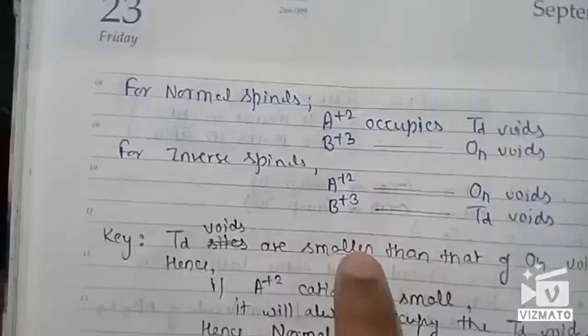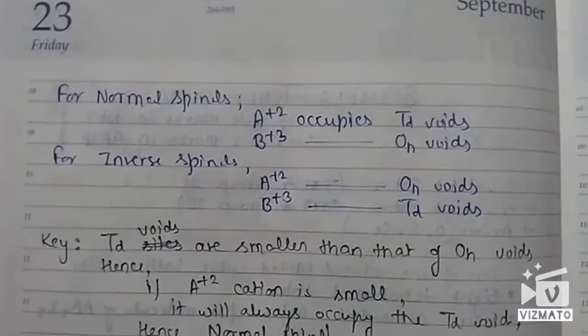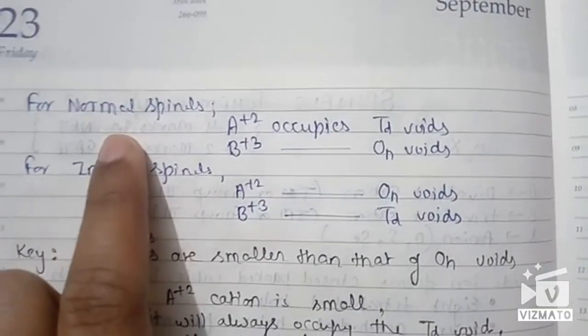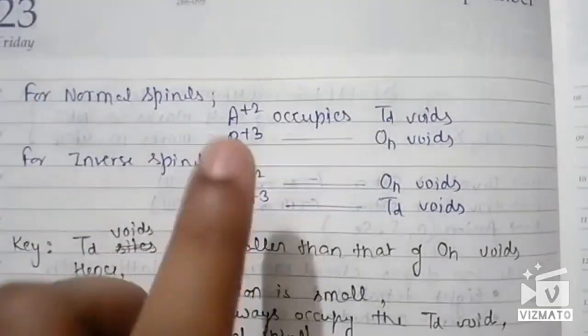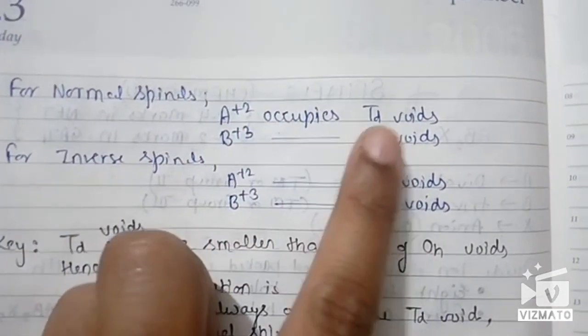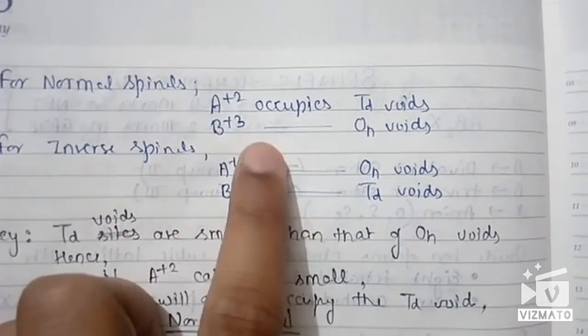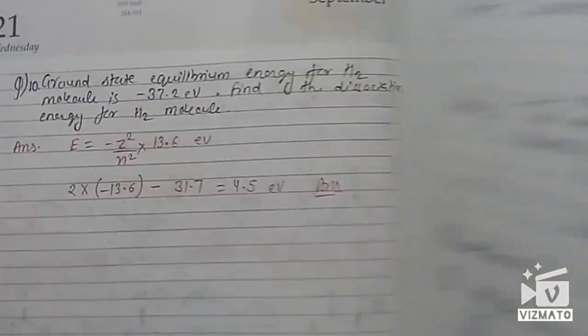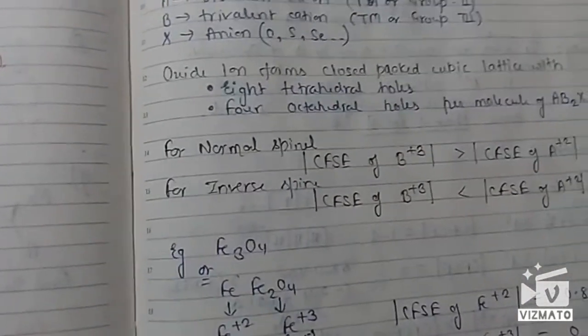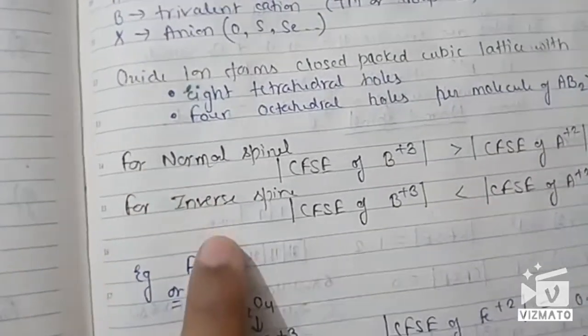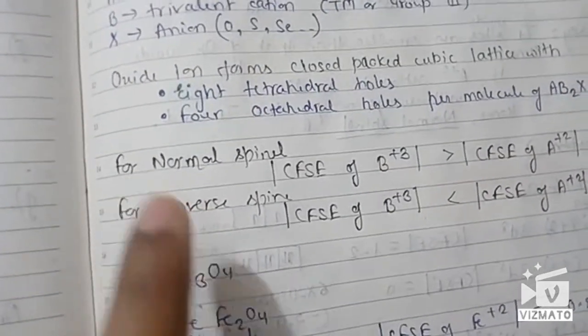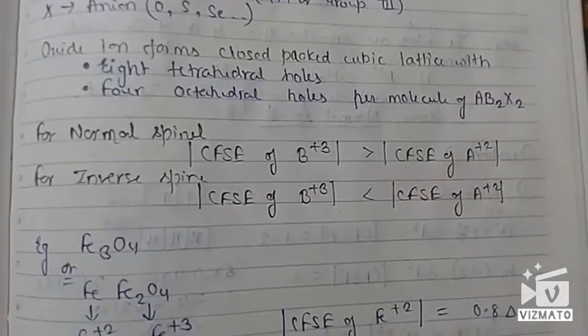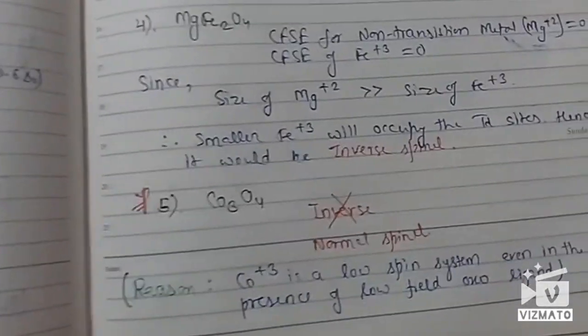There are basically two concepts. The first concept: for normal spinels the +2 cation occupies the tetrahedral void and the +3 cation occupies the octahedral void — determined from CFSE. If the CFSE for both cations is 0, then we use the size method.